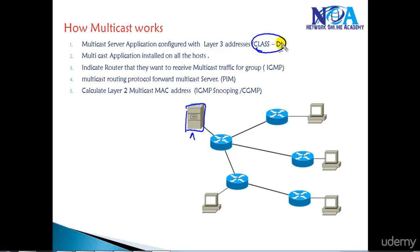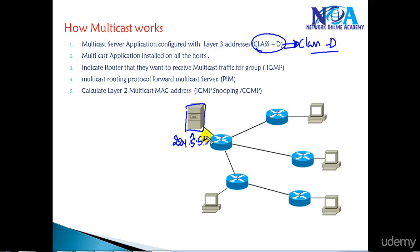We'll talk about multicast addressing categories in our next sections. Typically you have five classes in IP addressing — Class A, B, C, D, and E — and Class D is reserved for multicasting. So the multicast server has to be configured with a multicast address, and the network administrator needs to install the application on this server using that multicast address. That's the first step.